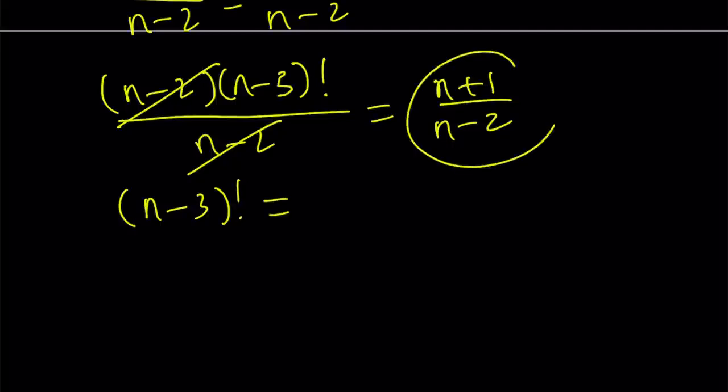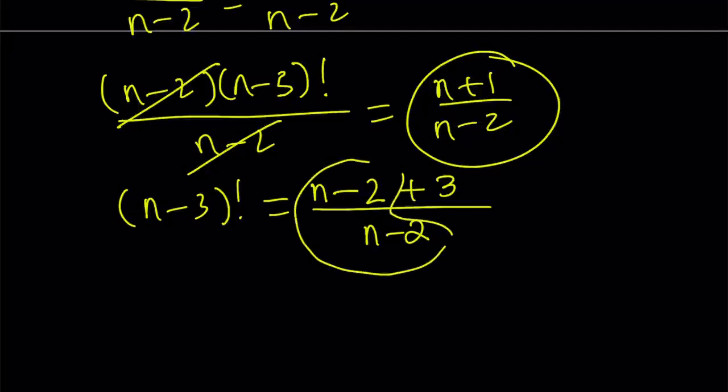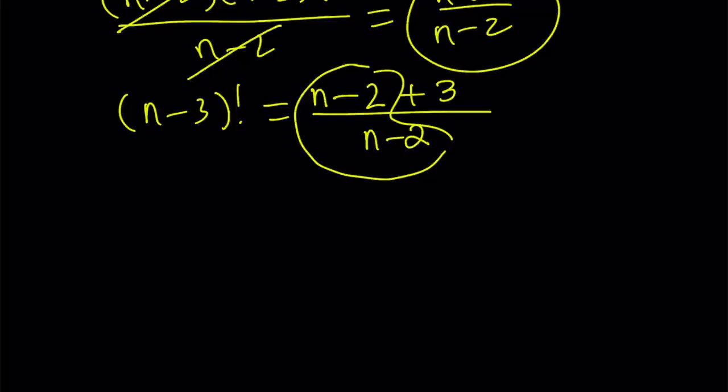How do you write this as an integer? Well, I can manipulate the numerator. This is a common technique that we use. I'm writing the n plus 1 as n minus 2 plus 3, to make it look like the denominator. And then from here, I can break it down and write this as n minus 3 factorial is equal to, I'm going to split it up into two pieces. So n minus 2 divided by n minus 2 is just going to be 1. And the rest is going to be 3 divided by n minus 2. Notice that we said this is an integer. Z is the set of integers.